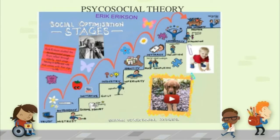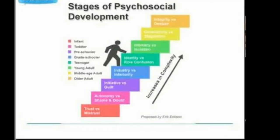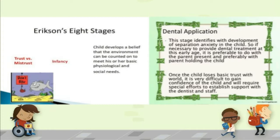Next is psychosocial theory by Eric Erikson. He gave 8 models: Trust vs. Mistrust, Autonomy vs. Shame, Initiative vs. Guilt, Industry vs. Inferiority, Identity vs. Confusion, Intimacy vs. Isolation, Generativity vs. Stagnation, and Integrity vs. Despair. First is Trust vs. Mistrust in infancy. This stage identifies with the development of separation anxiety in children. If necessary to provide dental treatment at this early age, it is preferable to do so with the parent present and holding the child. Once the child loses basic trust with the world, it is very difficult to gain confidence and will require special efforts to establish rapport with the dentist and staff.